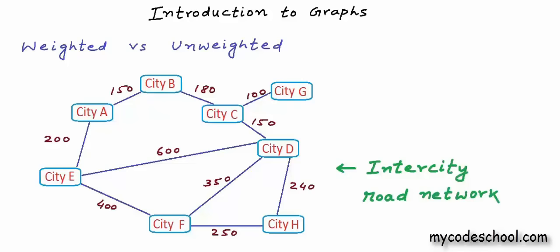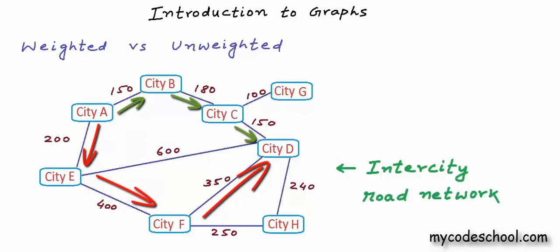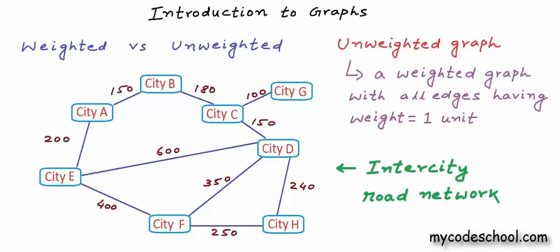Let's say in this graph we want to pick the best route from city A to city D. There are four possible routes shown in different colors. If I treat all edges as equal, the green route through B and C and the red route through E and F are equally good — both have three edges — while the yellow route through E is best with only two edges. But with different weights assigned to connections, I need to add up the weights of edges in a path to calculate total cost. When taking weight into account, the shortest route is through B and C. An unweighted graph can basically be seen as a weighted graph in which the weight of all edges is the same — typically we assume the weight as one.